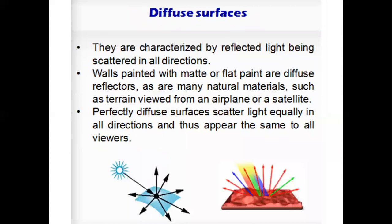The second type of lighting source is diffuse surfaces. These are characterized by reflected light which is scattered in all directions. Walls painted with matte or flat paint are diffuse reflectors, as are many natural materials such as terrain viewed from an airplane or a satellite. Whenever light falls on a particular surface, the light gets reflected in all directions equally. These diffuse surfaces appear the same to all viewers — for example, whenever sunlight falls on an object, light is reflected equally in all directions.